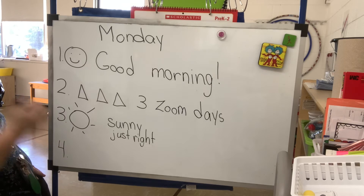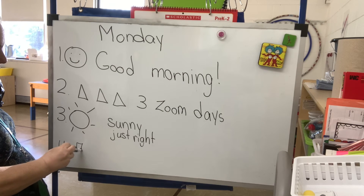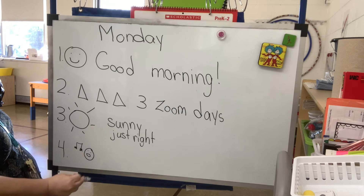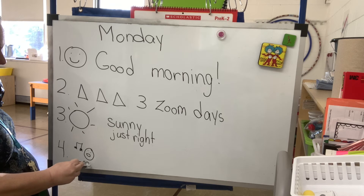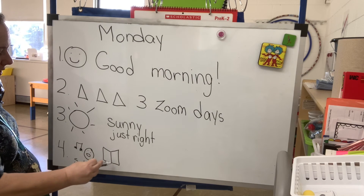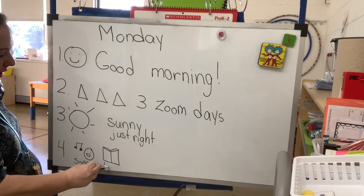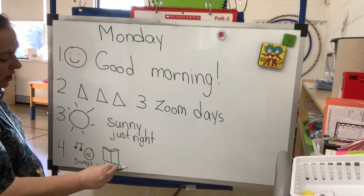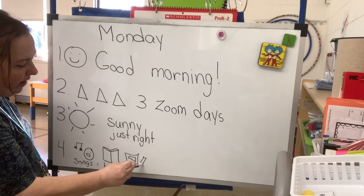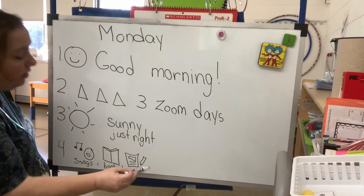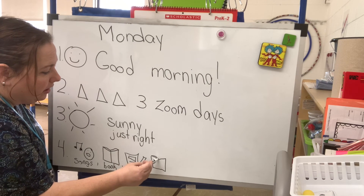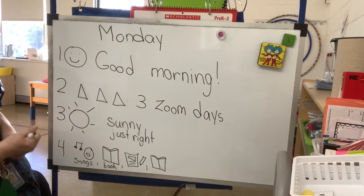Our fourth message is what we're going to do today. For large group — because we do that first on Mondays — we're going to sing songs and do a song book, and then we're going to read a book. For small group, we're going to do journals, so you'll need something to write with. And we are going to do another book, so you guys will be doing two books with me today: one after large group and one at small group.